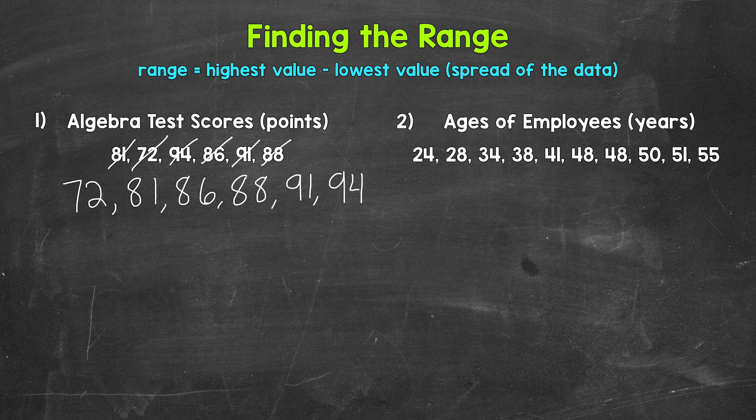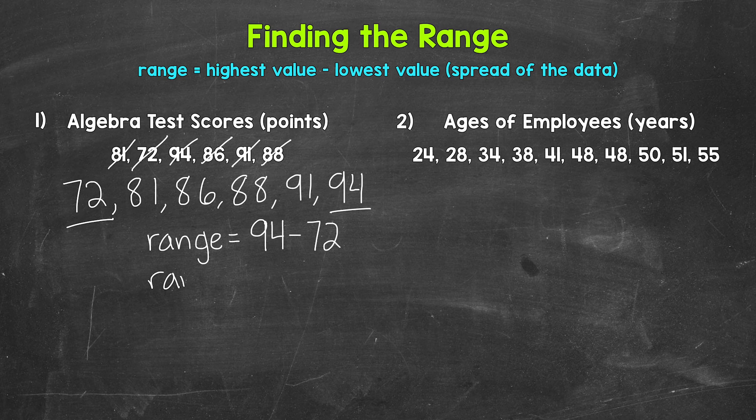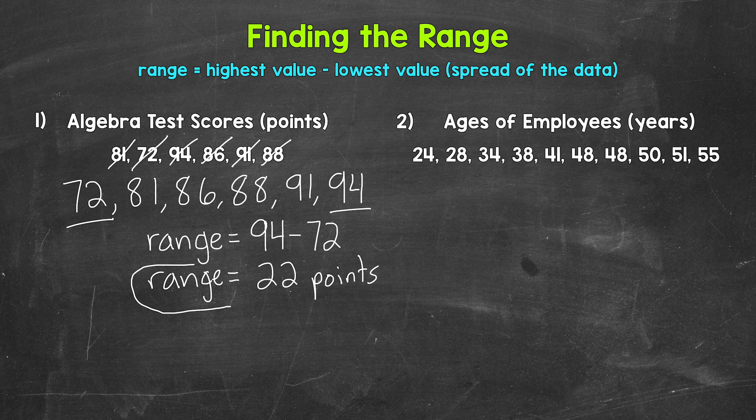So we need to find the highest value and lowest value, so the highest score and lowest score. The highest value is 94. The lowest value is 72. So to find the range, we need to take the highest value, 94, and subtract the lowest value, 72. 94 minus 72 gives us a range of 22. And this is points, so we can label it. The range of these test scores is 22 points.